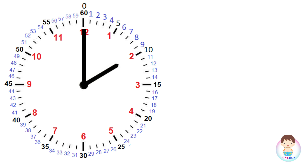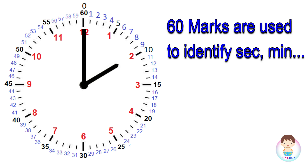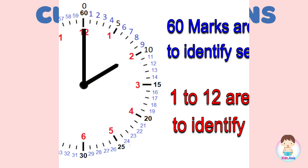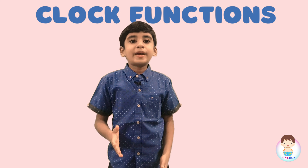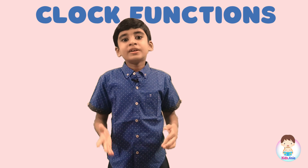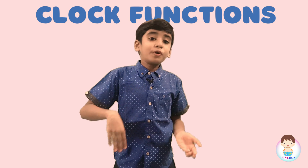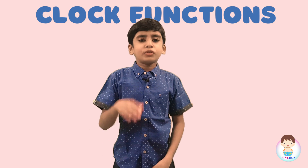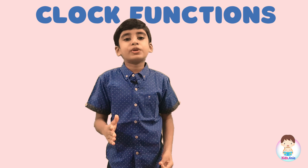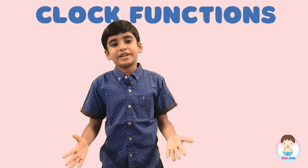Simply, we can say: in an analog clock, the 60 marks are used to identify the seconds and minutes, and the numbers 1 to 12 are used to identify the hour. Based on whether the time is before noon or after noon, we call it AM or PM. If you are not aware of AM or PM, please check our Part 1 video of clock and its functions.